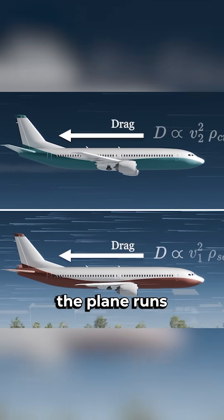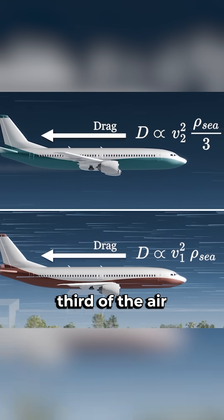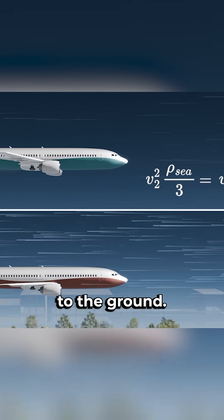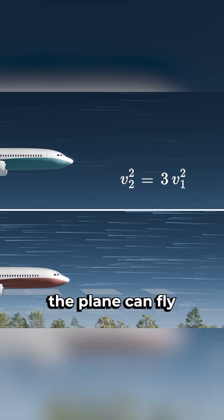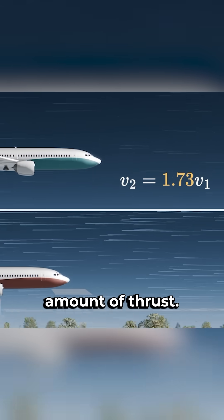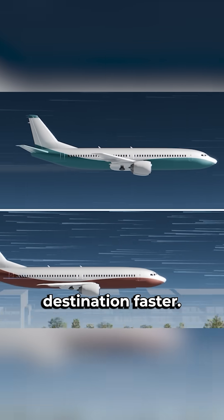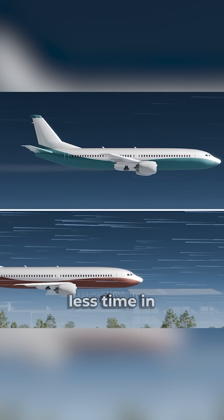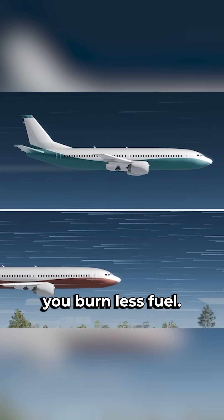So flying at this altitude, the plane runs into a third of the air molecules it would closer to the ground. That means the plane can fly about 73% faster for the same amount of thrust. And as a result, you get to your destination faster. And since you spend less time in the air, you burn less fuel.